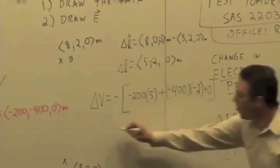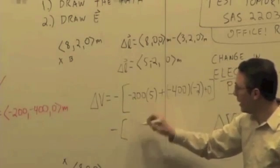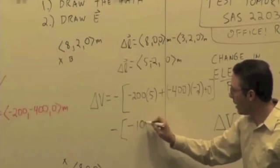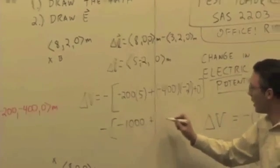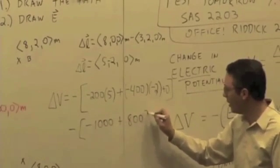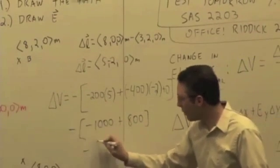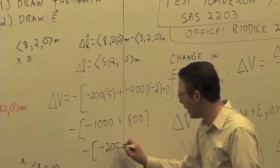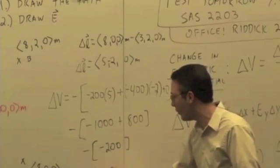So what do we get? We get a negative sign. We get -1000 in here plus positive 800. And so inside the parentheses I get -200, but then I multiply by a negative sign, so I get 200 volts.